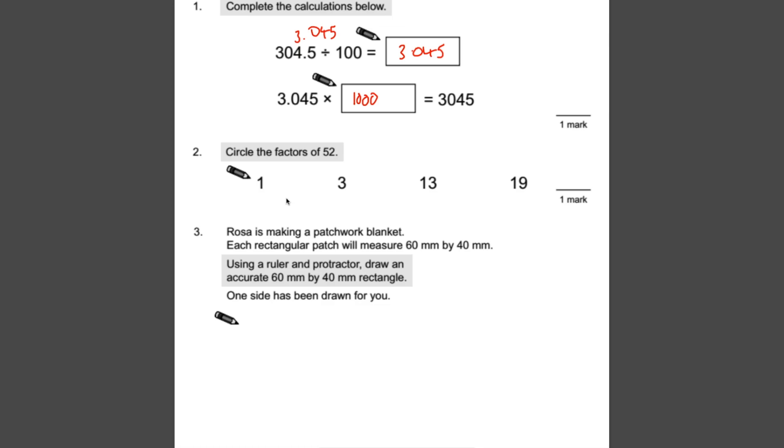Number two, circle the factors of 52. A factor, as you should know, is a number that goes into that number, 52, perfectly without any remainders. So does one fit into 52? Yep, there's 52 ones in 52, so that's one of them. Does three fit? Well, if you carry on with your three times table, if you get to 36 and you add another three, you get to 39, you keep going, you'll find that 52 isn't in three times table, so that's not one of them.